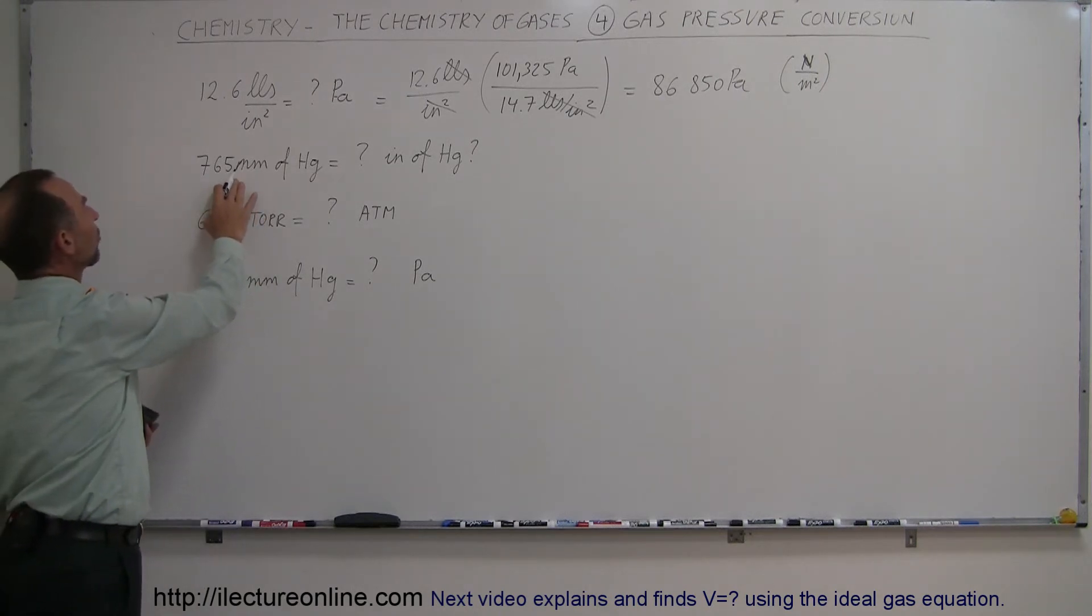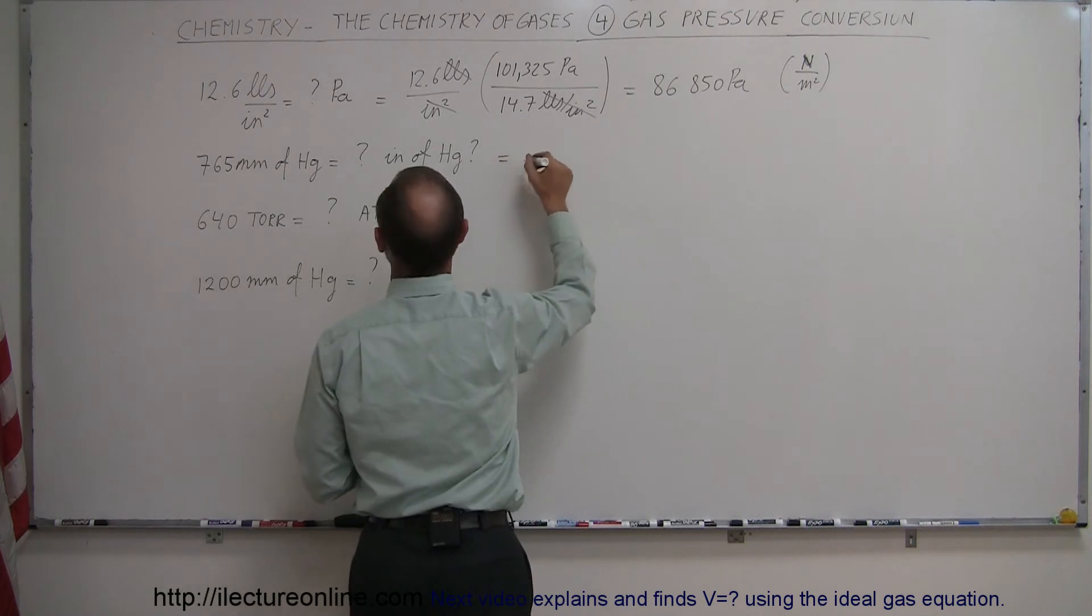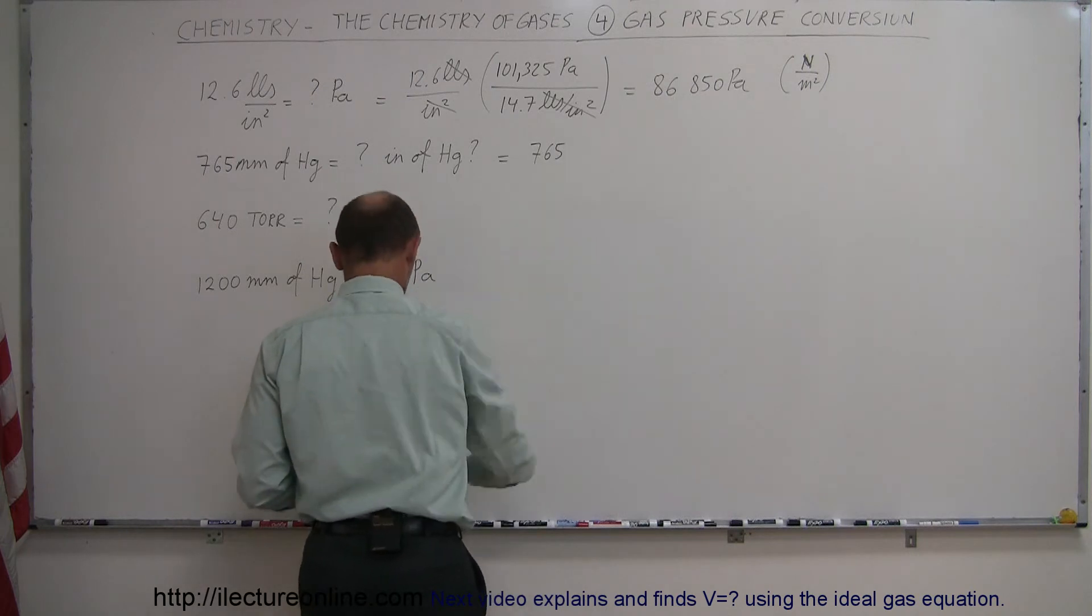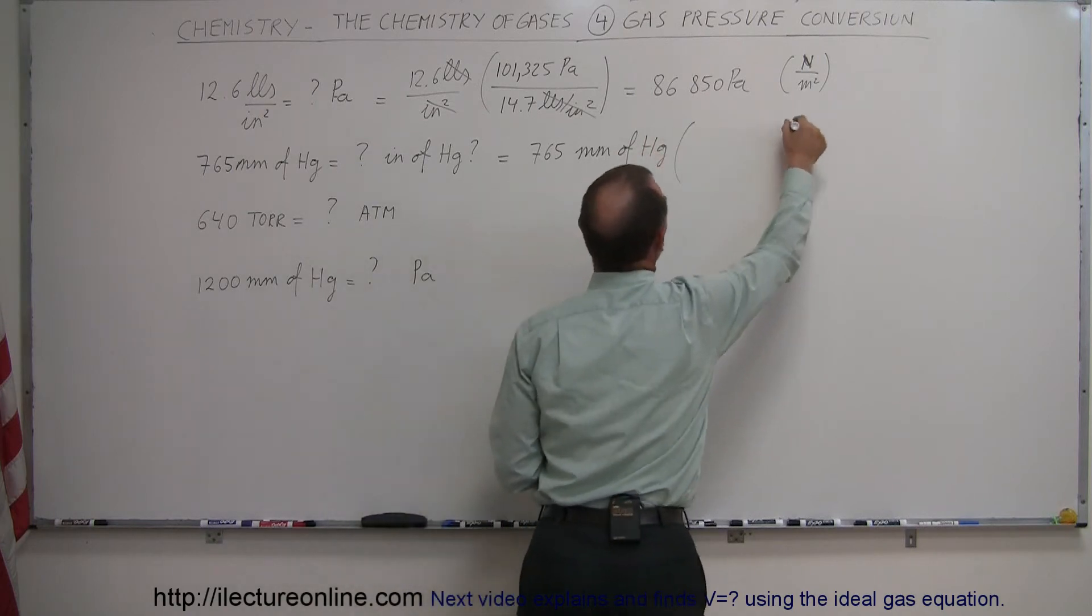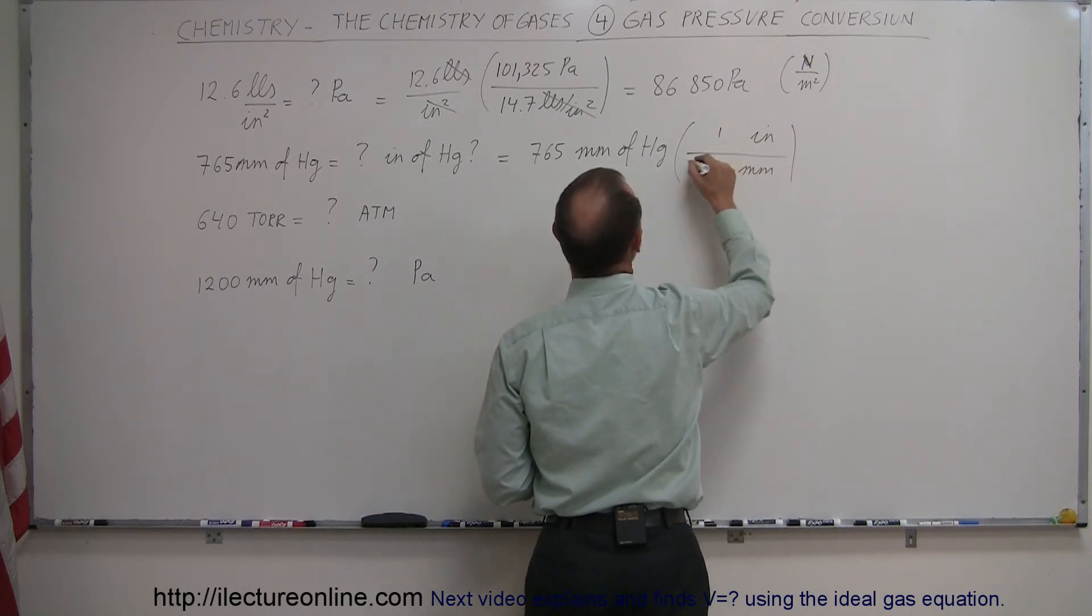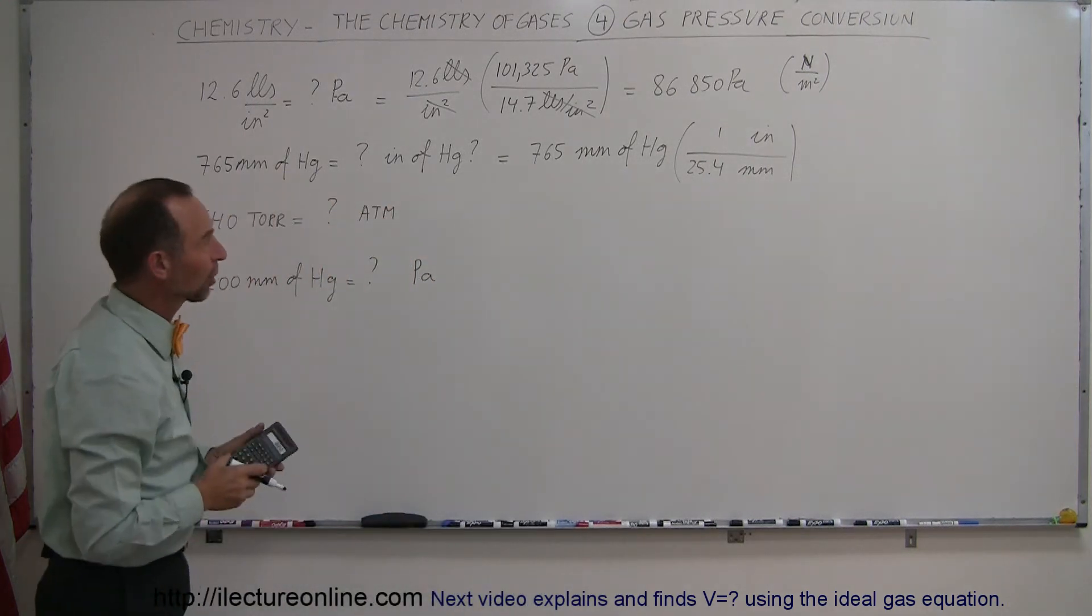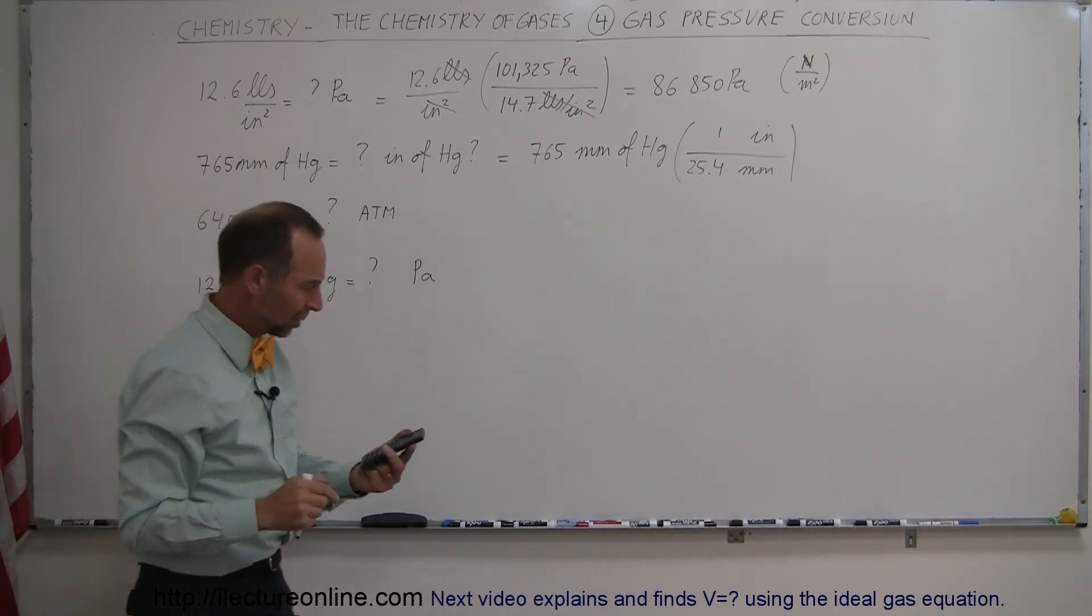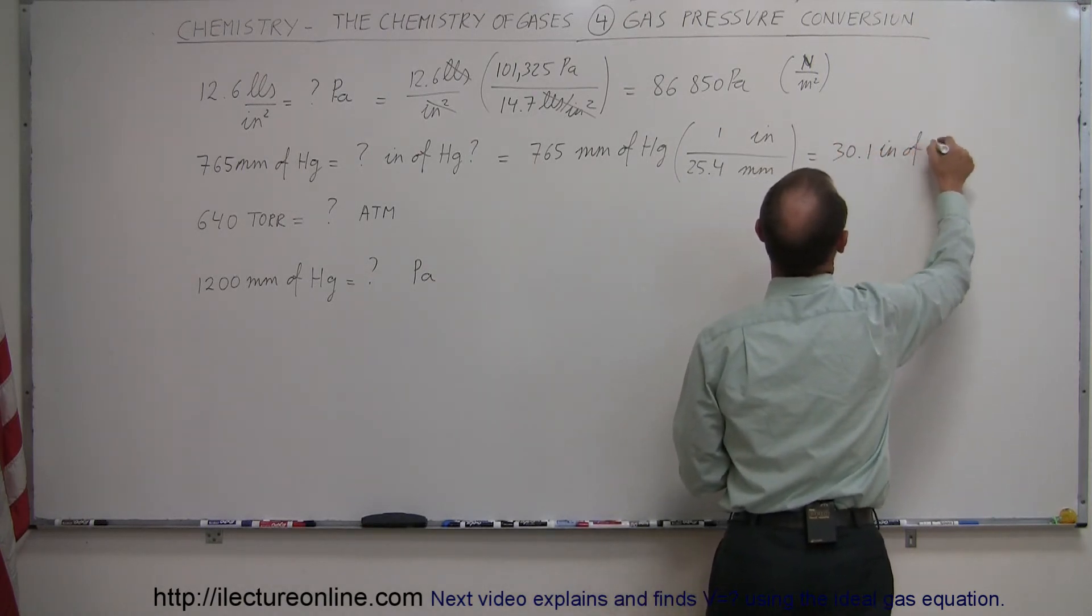How about from millimeters of mercury to inches of mercury? There we're going to use a conversion from millimeters to inches. So this is equal to 765 millimeters of mercury, and now we're going to multiply that times the conversion. We want inches at the top, millimeters at the bottom, and one inch is 25.4 millimeters. Again, a unit conversion you can readily get out of the back of most textbooks. So now we take 765, divide that by 25.4, and we get 30.1. So this is equal to 30.1 inches of mercury.